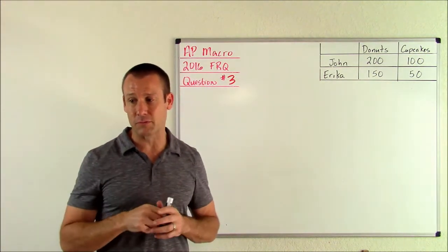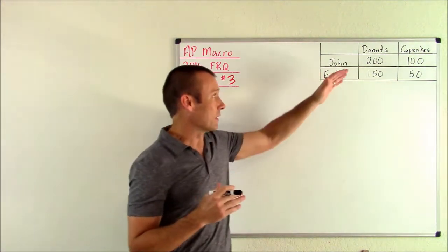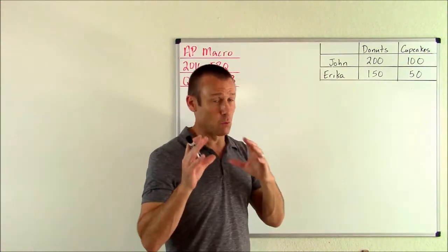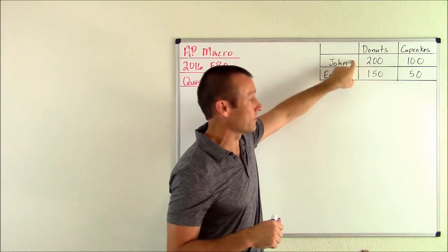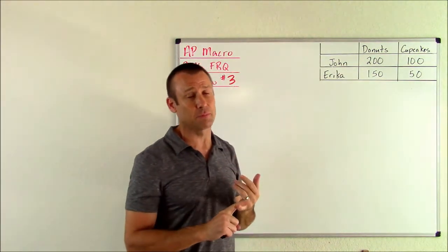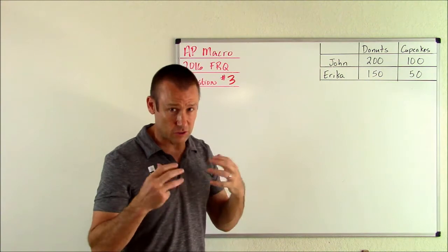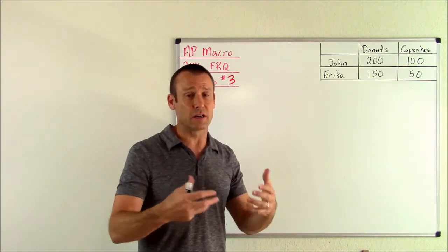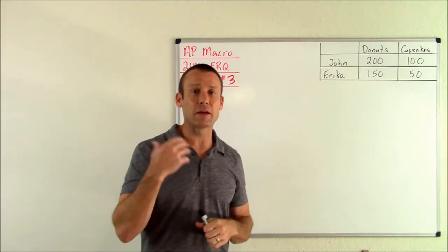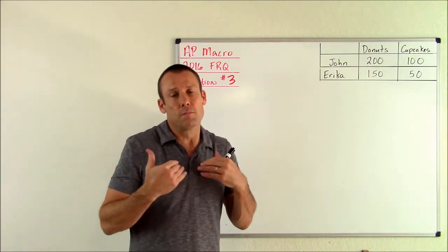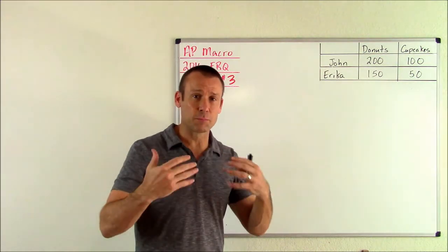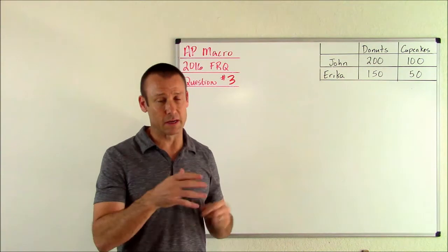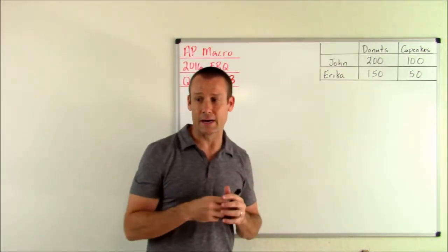Part A: Who has the absolute advantage in producing donuts? Explain. We go to our table. Basically the absolute advantage is just like, who's better? Given one day, who can make more donuts? That is John. John's got the absolute advantage. Our explanation can just be given the same amount of time, in one day, John can make more than Erica. I like to use the word resources, so the way I write the explanation is John can produce more given the same amount of resources. The resource in this example is one day, it's time.